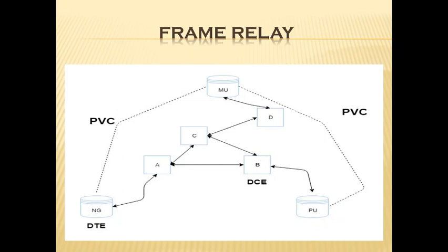The connection between DTE devices and DCE devices consists of both a physical layer component and a link layer component. The physical component defines mechanical, electrical, functional, and procedural specifications for the connection between the devices. One of the most commonly used physical layer interface specifications is the RS-232 specification. The link layer component defines the protocol that establishes the connection between DCE devices such as a router and DCE devices such as a switch.